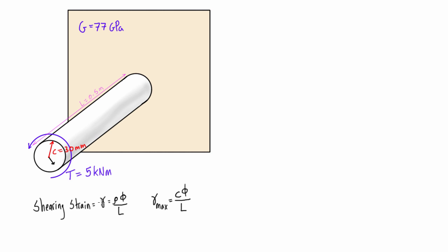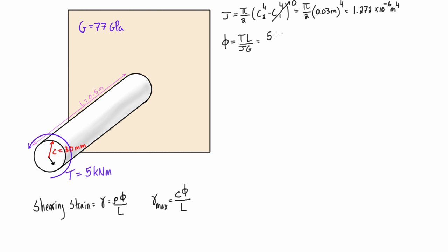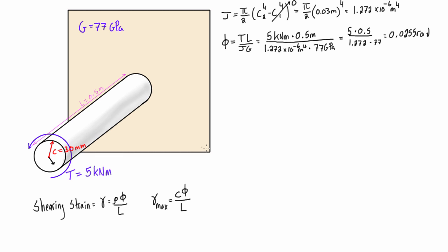If we want to start calculating shearing strains, we need the angle of twist. We did this exact same problem in a previous video, so we'll skip through the equations. The angle of twist was 0.0255 radians.